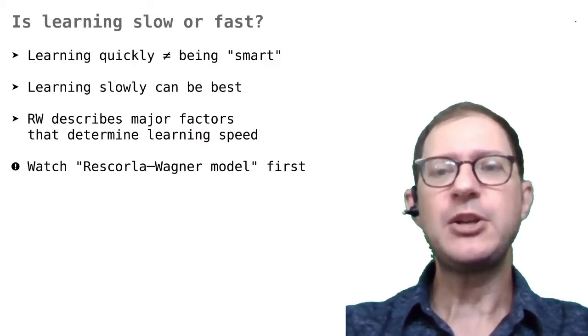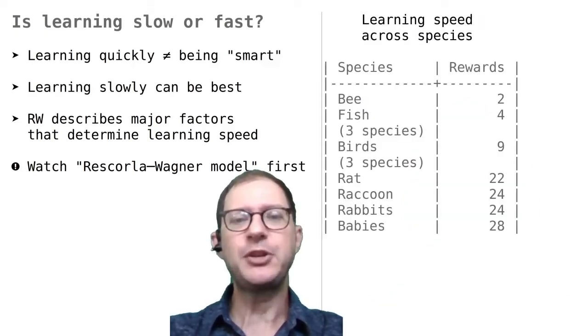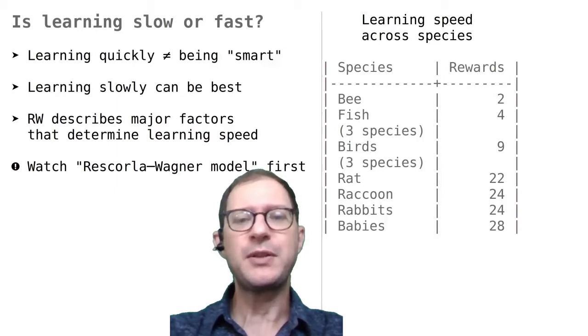The first is that learning quickly does not necessarily mean being smart. This table shows how quickly different species learn a simple task like turning left or right or choosing black over white. As you can see, the more we think an animal is smart, the more slowly it seems to learn in these tasks. This is not to say that bees or fish are smarter than rats and human babies. It just shows that sometimes the results of learning experiments need some thinking to be understood.